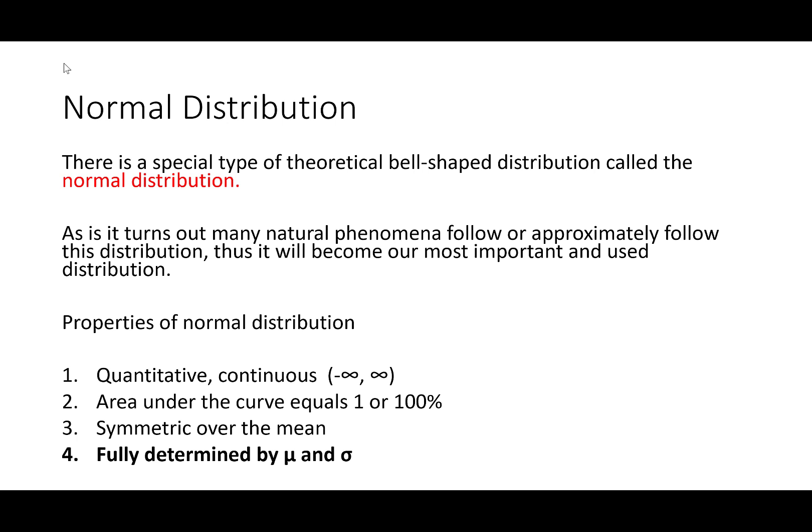The normal distribution is quantitative and continuous. Specifically, it ranges from negative infinity to positive infinity and can take on any single value between those two values. The area under this curve equals 1, or 100%, and it is symmetric over the mean.